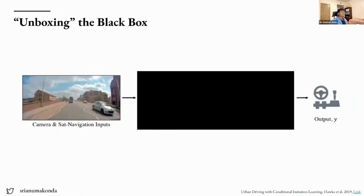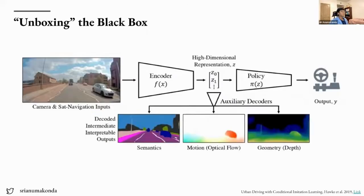End-to-end learning itself is like a black box — it's hard to understand why the model makes its decisions. A paper from Wave.ai addresses this by visualizing intermediate representations of our scene to unbox that black box. They do three main things: semantic segmentation, which assigns a class to every pixel so we understand which sections matter — cars are highlighted in dark blue, lane lines in white, sky in lighter blue; optical flow, which measures change across consecutive images; and depth estimation.